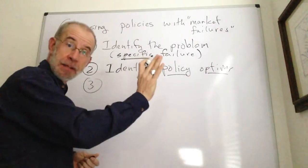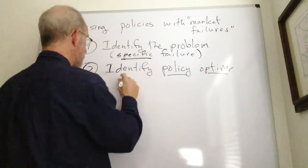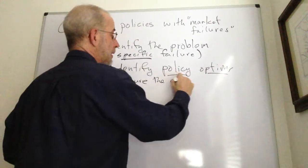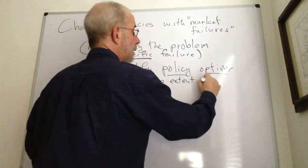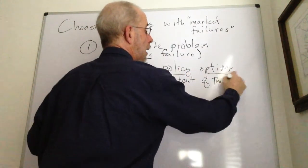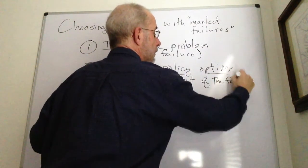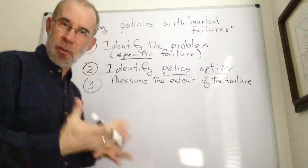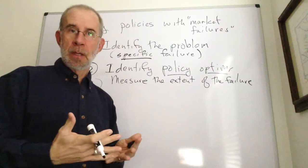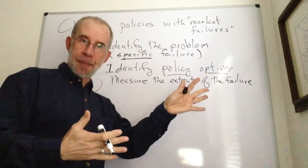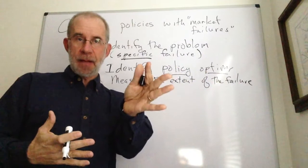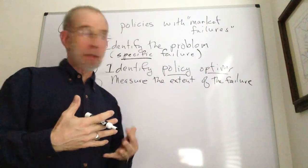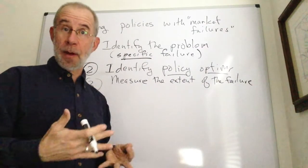And so identifying these policy options is very, very important. You need to measure the extent of the market failure. And when I say the extent of the failure, I need to really quantify how big is this problem. So you look at the various options. You're identifying the extent to which the policy, where the market is not operating efficiently.